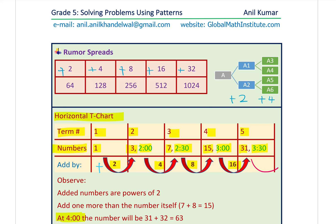How many persons are we going to add now? As you can see, one more than the people aware of earlier. So we are going to add 32, or you can say 16 times 2 — the number is doubling up. When you add 32, then 31 plus 32 gives you 63. So at 4, 63 people know about the rumor.